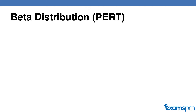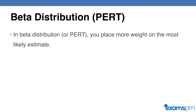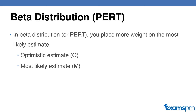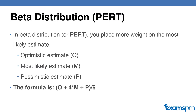Now, when we get into the beta distribution, beta distribution is also called PERT. In beta distribution, you are taking a weighted average, and there will be more weight on the most likely estimate. We still have our three points — the optimistic, the most likely, and the pessimistic — but this time we put a lot more weight on the most likely estimate. The formula is: optimistic plus four times the most likely, plus the pessimistic estimate, divided by six.